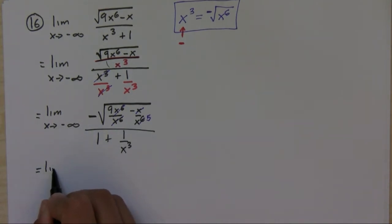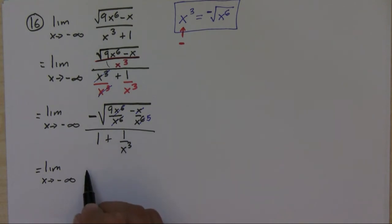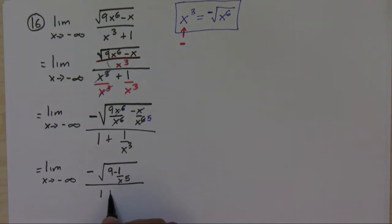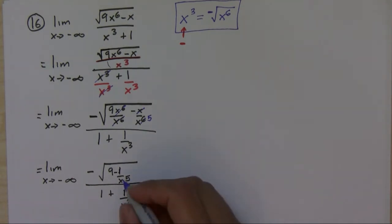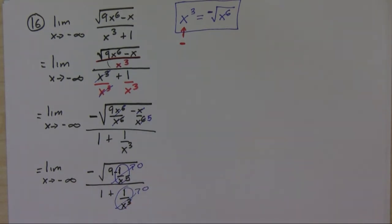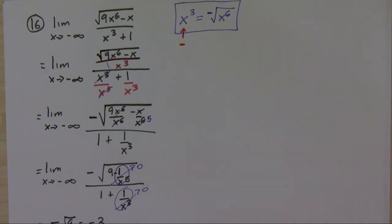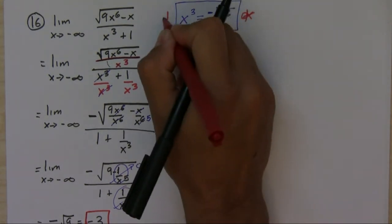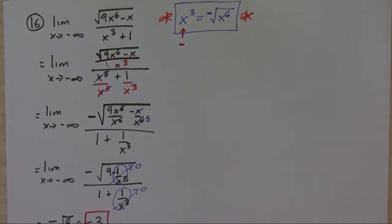Let me rewrite what we have left: the limit as x approaches negative infinity of negative square root of nine minus one over x to the fifth, all over one plus one over x to the third. Now these terms go to zero, so the only thing left is negative square root of nine, which is negative three. If you hadn't done this conversion you would have gotten positive three, which is the wrong answer. So you have to be very careful.